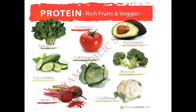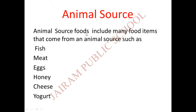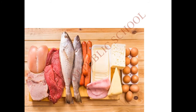Next - animal source. A-N-I-M-A-L animal, S-O-U-R-C-E source. Animal source foods include many food items that come from an animal, such as fish, meat, eggs, honey, cheese, and yogurt. These are all the animal sources we are getting from the animals - fish, meat, eggs, honey, cheese, yogurt. These are all animal source products.